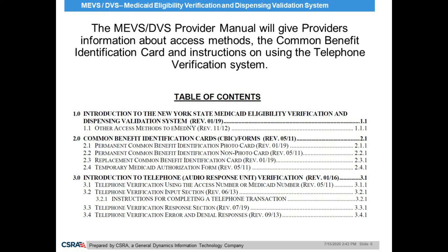Once in the manual, providers will find that the Table of Contents is a helpful resource. Each item in the Table of Contents is a link, and by clicking on that section of the manual, it will take a provider to that section. The first parts of the MEVS DVS Provider Manual supply providers with helpful information about MEVS access methods, the Common Benefit Identification Card, and instructions to the Telephone Verification System, also known as the Audio Response Unit.